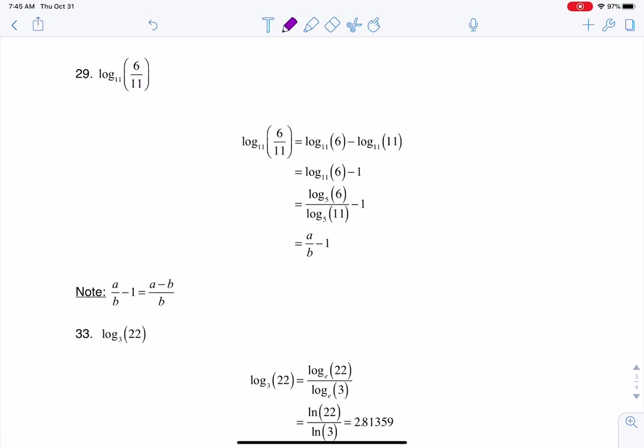just so that we're clear, we are given that log base 5 of 6 is equal to A, and log base 5 of 11 is equal to B. So that's what we're given right out the gate, and